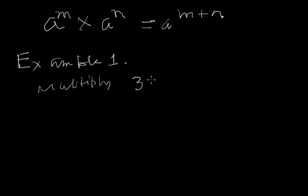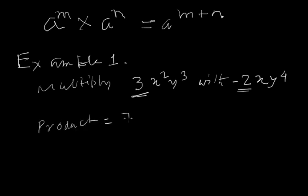3x²y³ with -2xy⁴. So you see that in the first, there is 3 and here the coefficient is minus 2. So product equals to, first you write minus 2 and then see here x, the base and here is x. The powers should be added according to the rule of this.